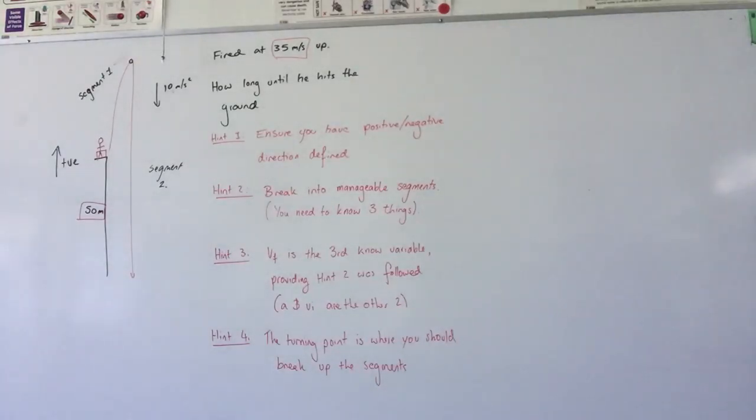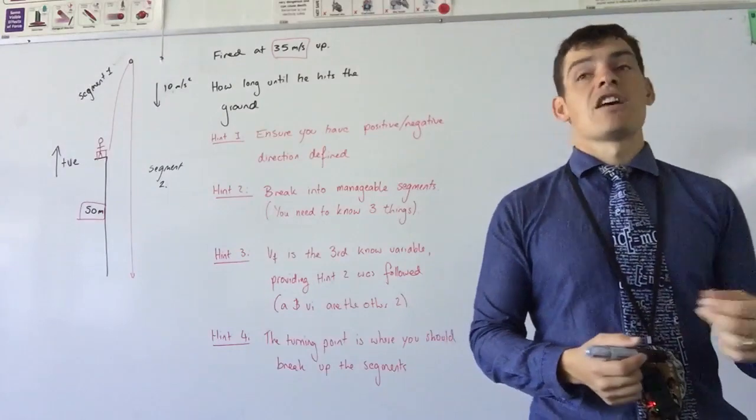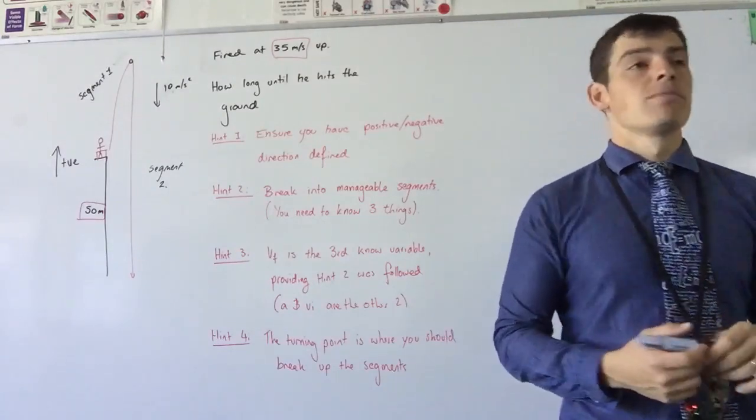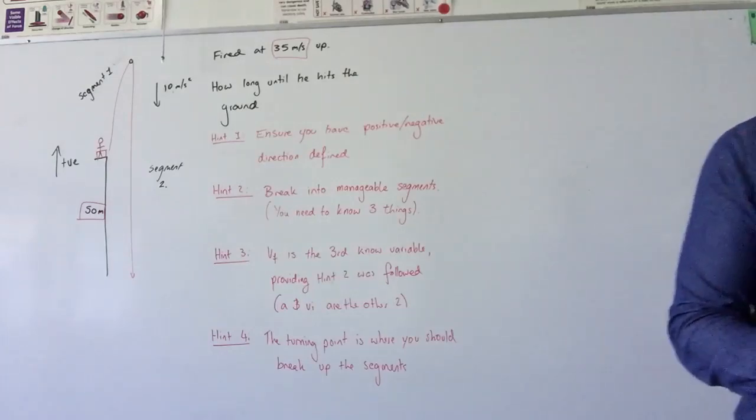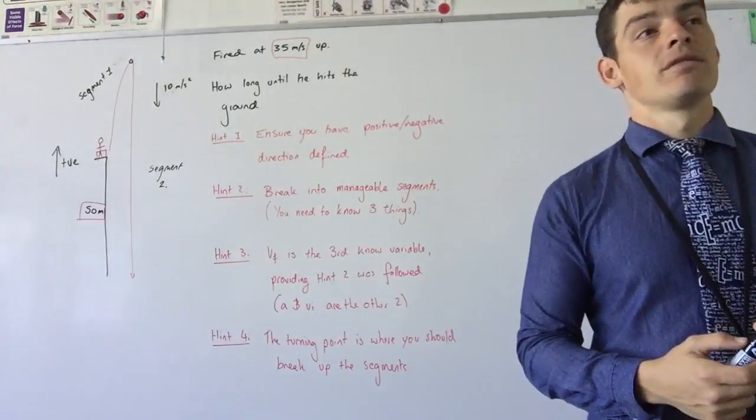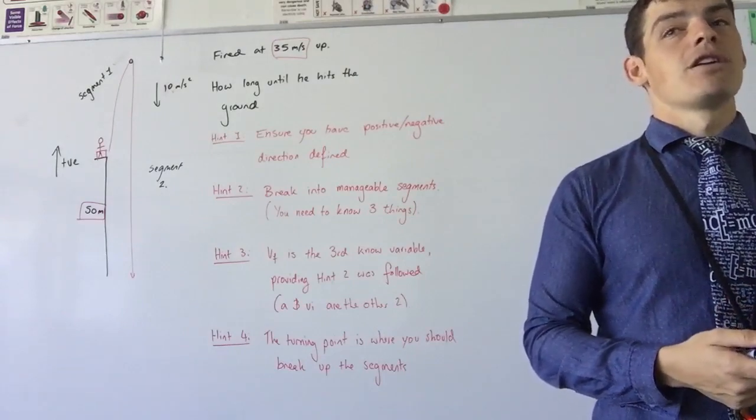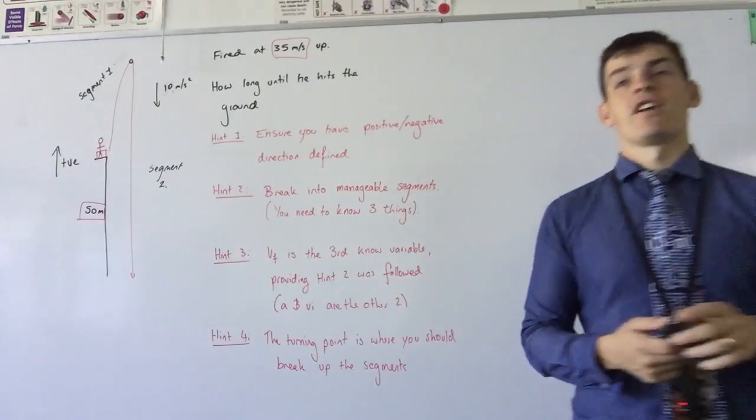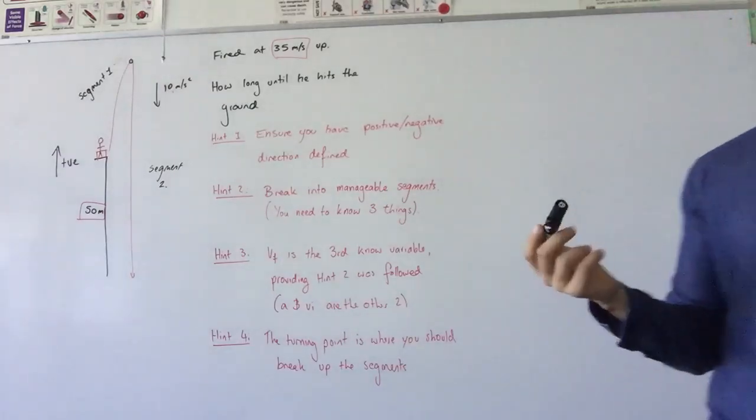If your knowledge of quadratics was good enough, you could use D equals VI T plus half A T squared. And I heard some gentleman in the back saying syntax error. Correct? I'm going to guess that means you got the square root of a negative number, which means you're on the right track.